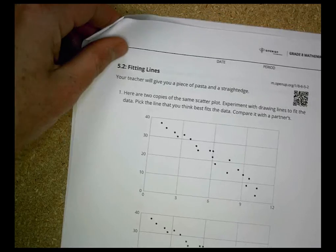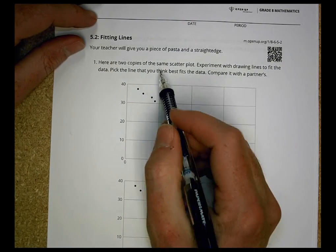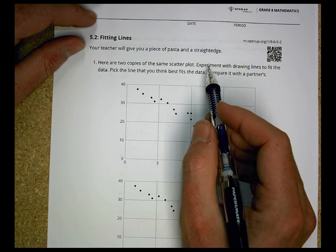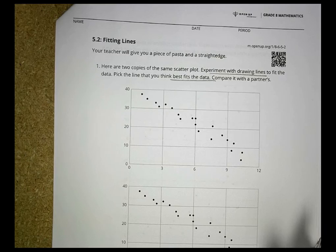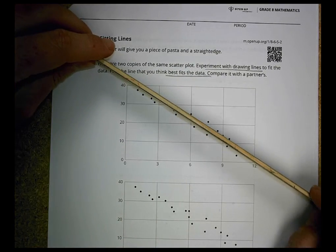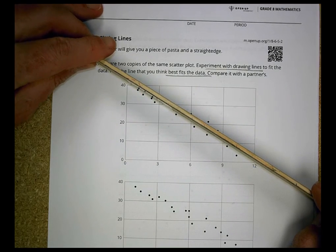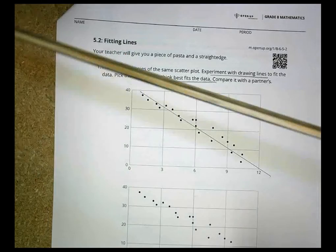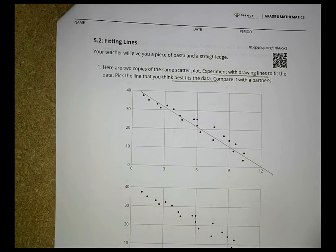Your teacher will give you a piece of pasta and a straight edge. Here are two copies of the same scatter plot — experiment with drawing lines to fit the data and pick the line you think best fits. The idea is to draw lines and pick the one that fits best. Using a ruler, you want to make it go somewhere in between all the data, splitting it right down the middle. Pick a point about in the middle and draw a line through that.